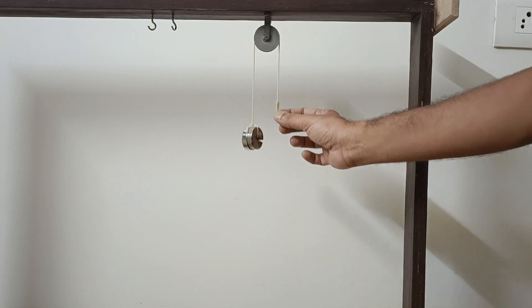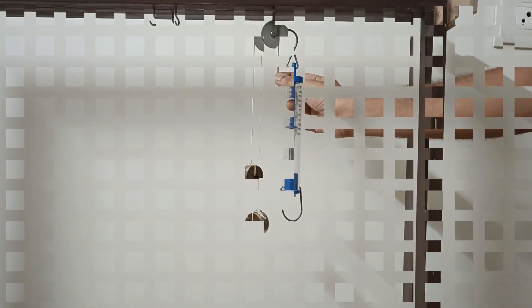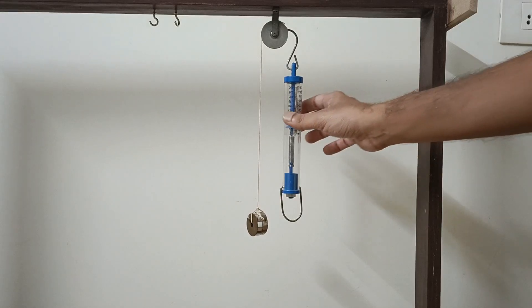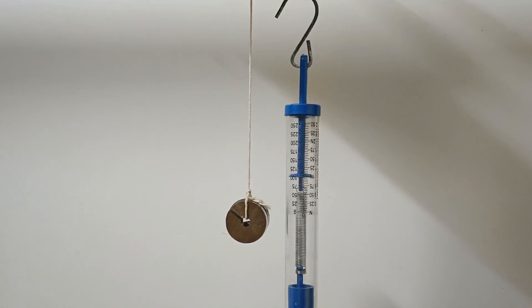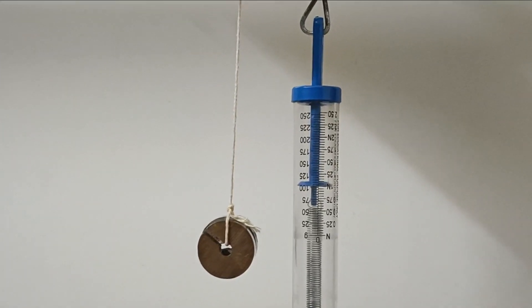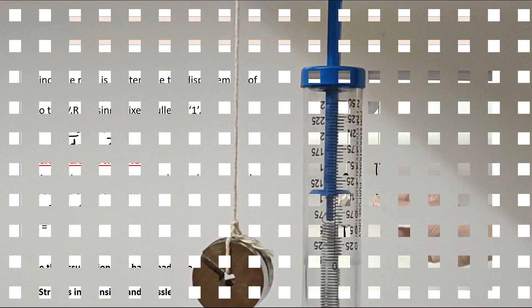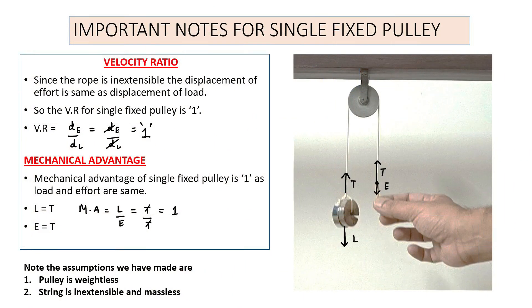Let's connect a spring balance at the effort end to measure the magnitude of the effort, and we note that the effort is also 100 gram force. So we can conclude that the fixed pulley has a mechanical advantage of one, and this is used to simply change the direction of effort.